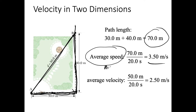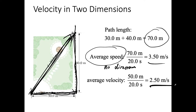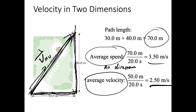Speed doesn't have a direction. What about average velocity? It's the displacement divided by the time. Displacement is a vector pointing from initial position to final position, and the magnitude of this displacement is 50 meters. So the magnitude of average velocity is 50 divided by 20 seconds, which is 2.5 meters per second. Average velocity does have a direction — it's in the same direction as the displacement, from A to B. Distance and speed have no direction.